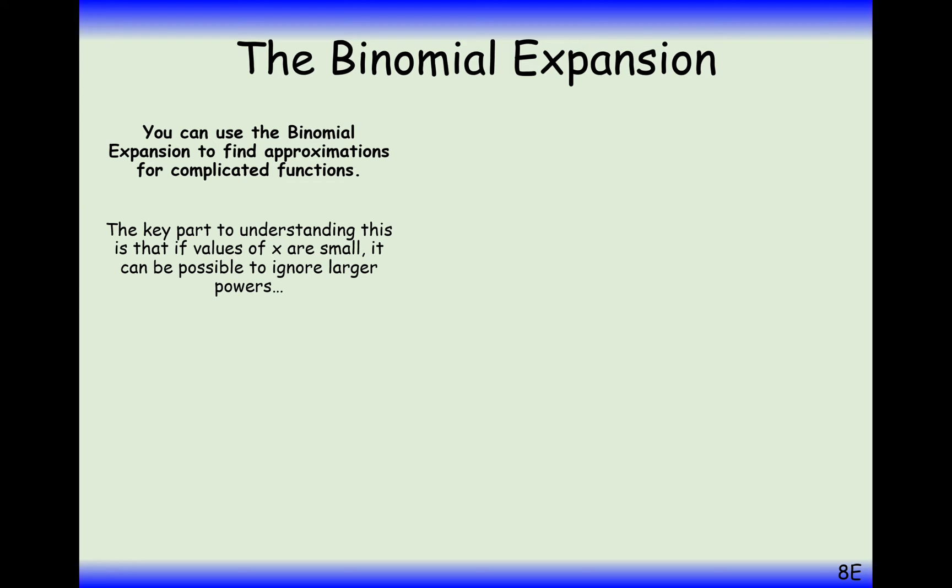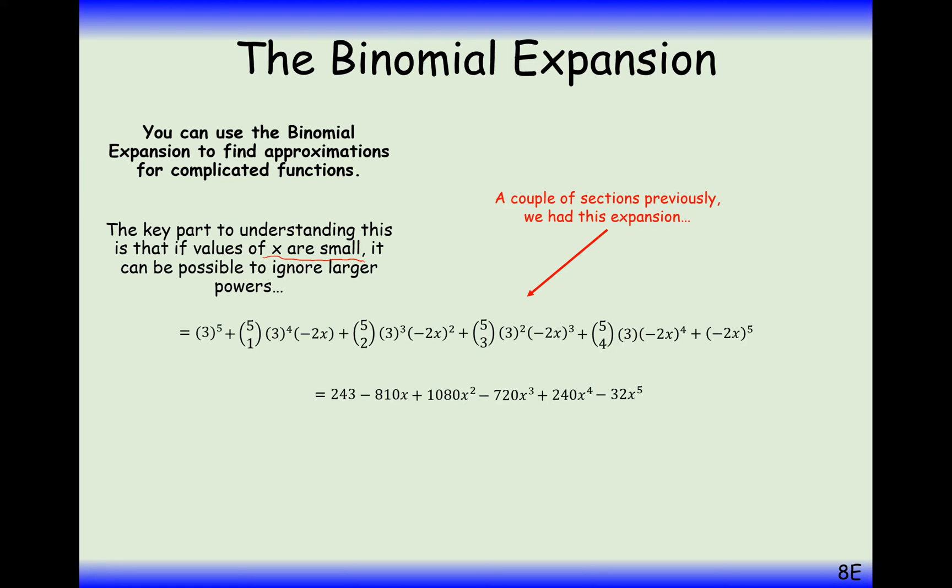So when we're using binomial expansion to approximate very high powers of something, we can only do this where x is a very small number. Now let's consider what happens when x is 0.2 in this expansion here.